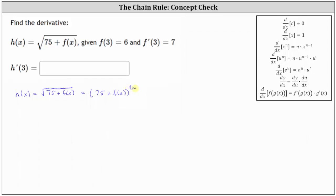Now we can apply the power rule of differentiation with the chain rule to determine h prime of x. Notice the inner function, which we often call u, is 75 plus f of x. So if u equals 75 plus f of x, then u prime, or du/dx, is equal to zero plus f prime of x, or just f prime of x.